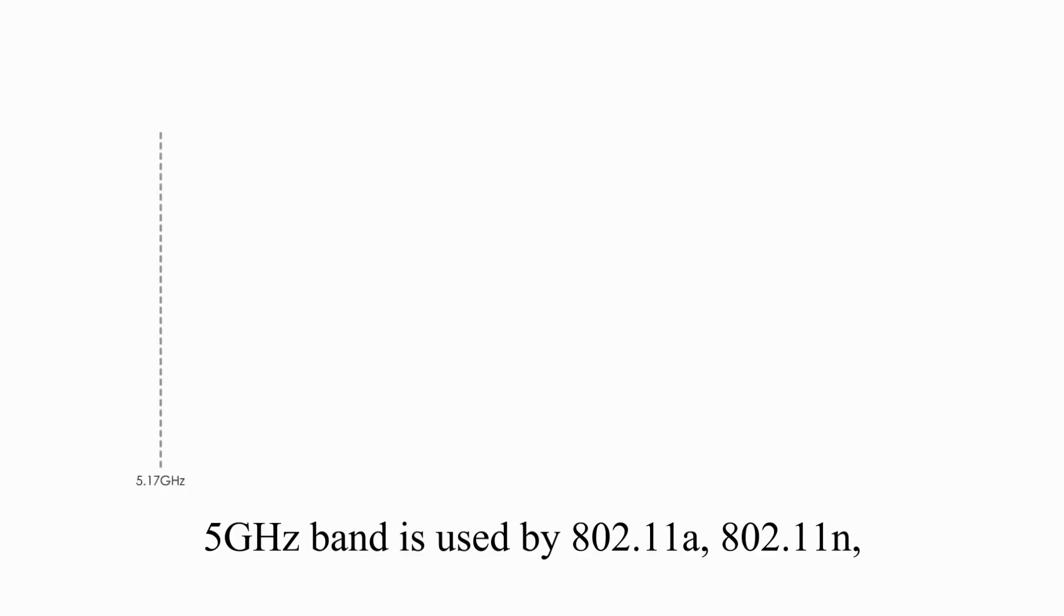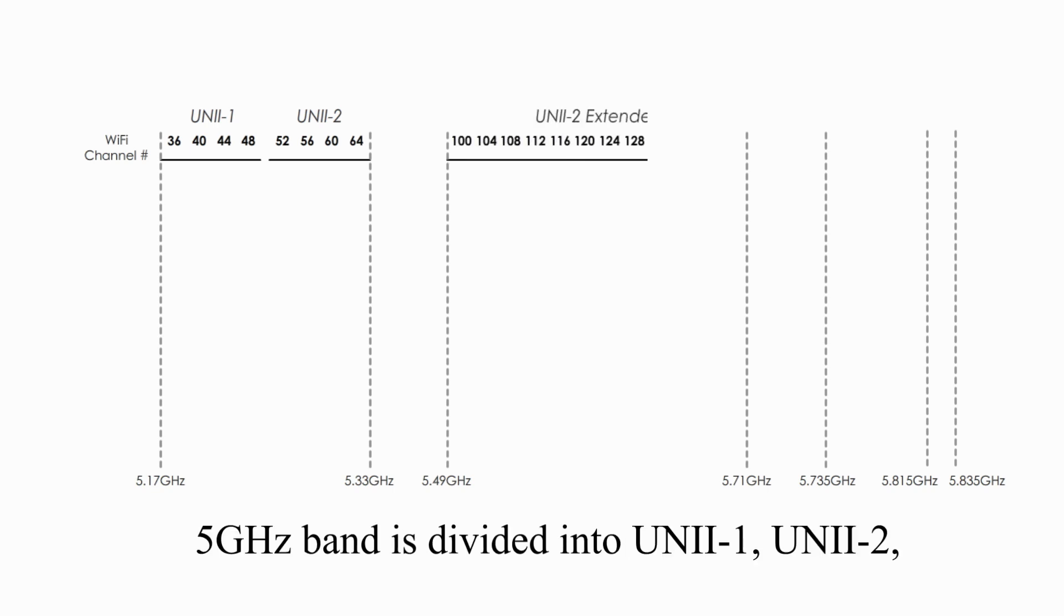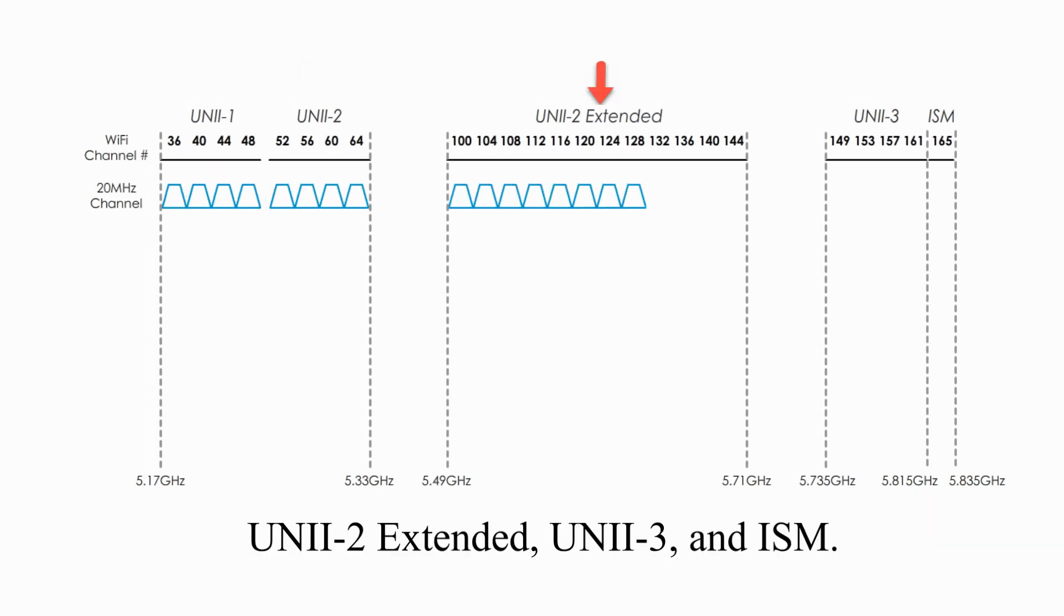5 GHz band is used by 802.11A, N, and AC standards. 5 GHz band is divided into UNII-1, UNII-2, UNII-2 Extended, UNII-3, and ISM.